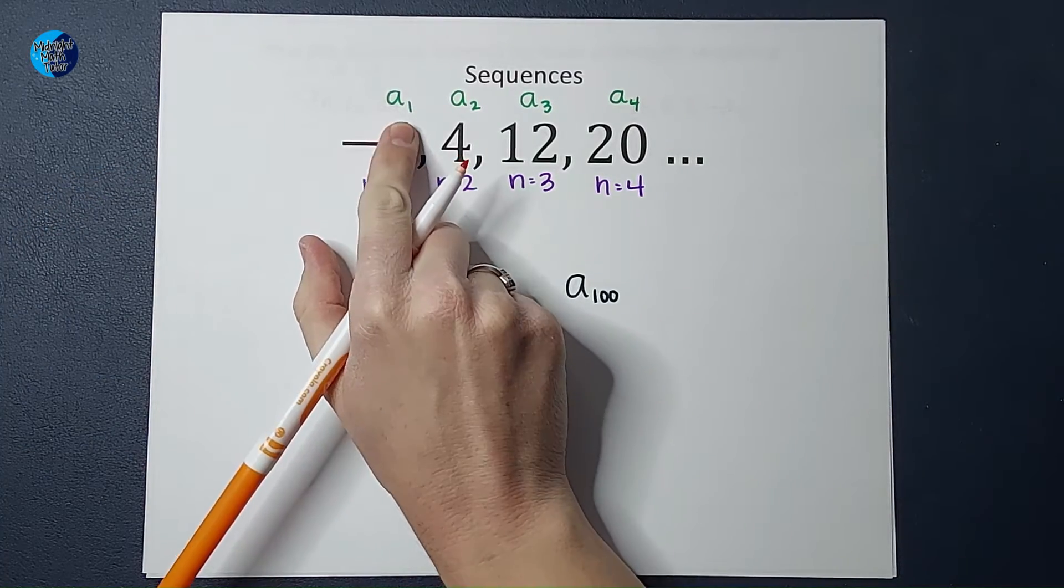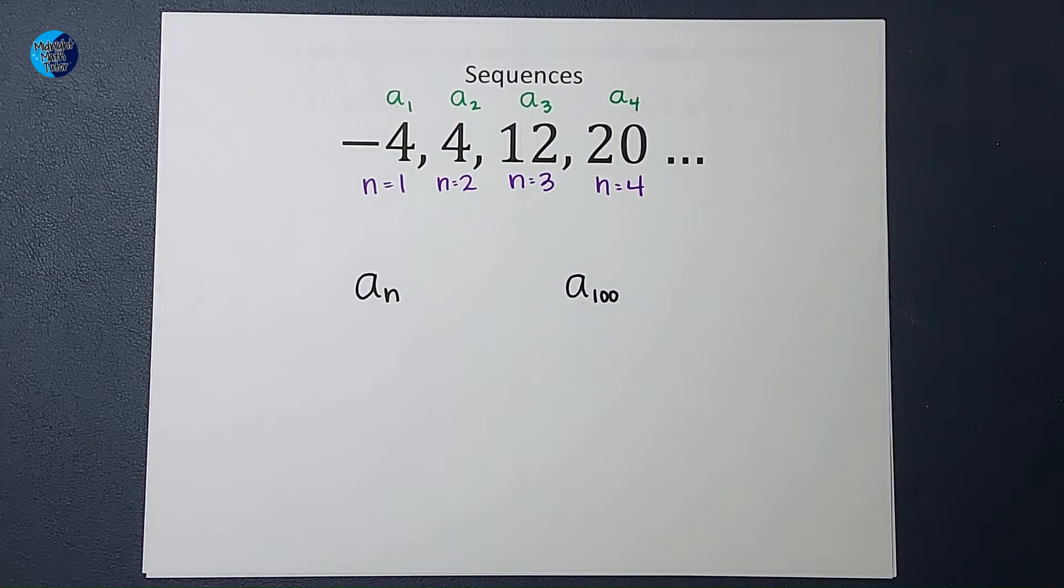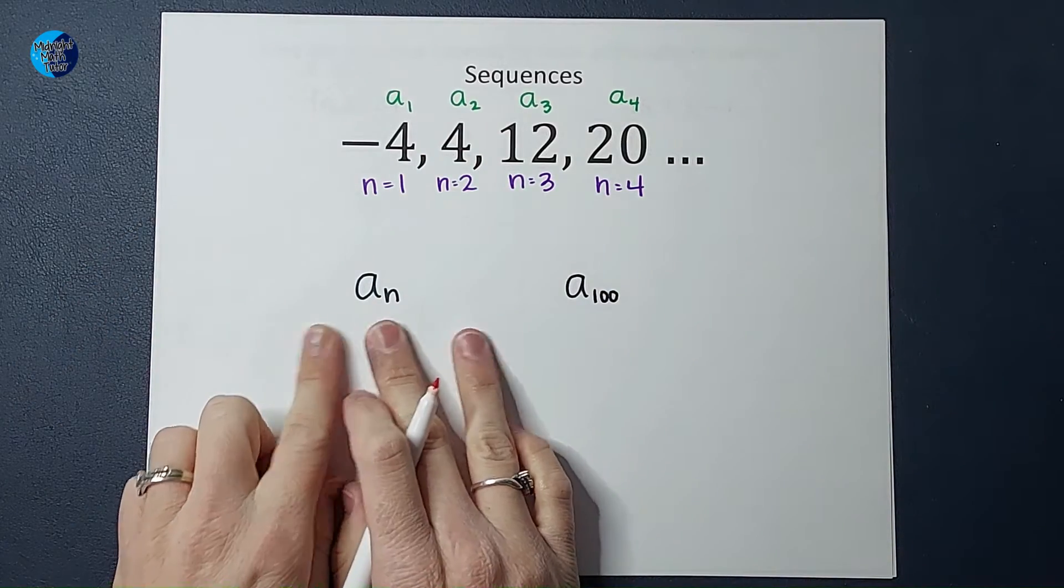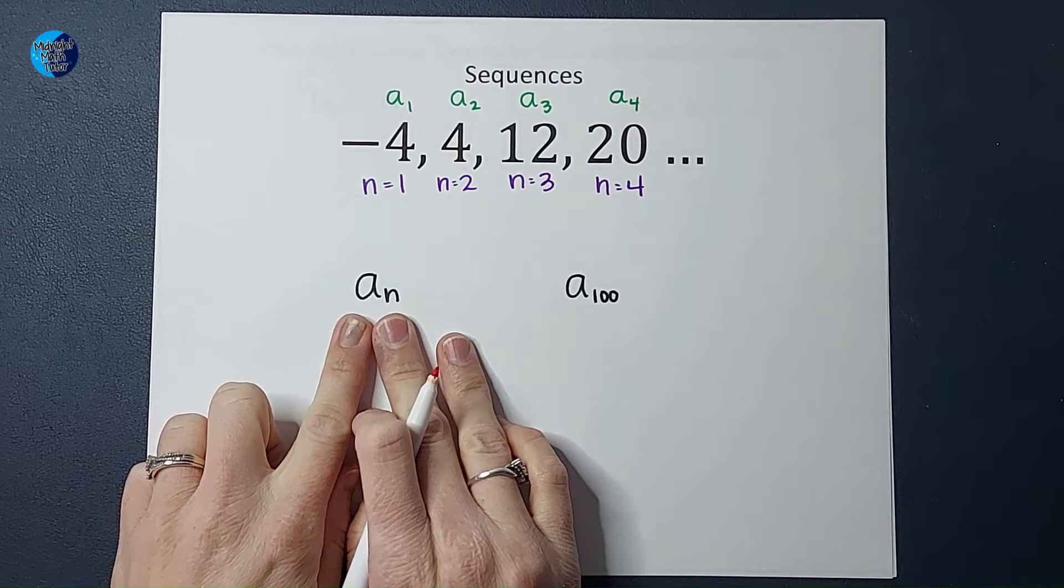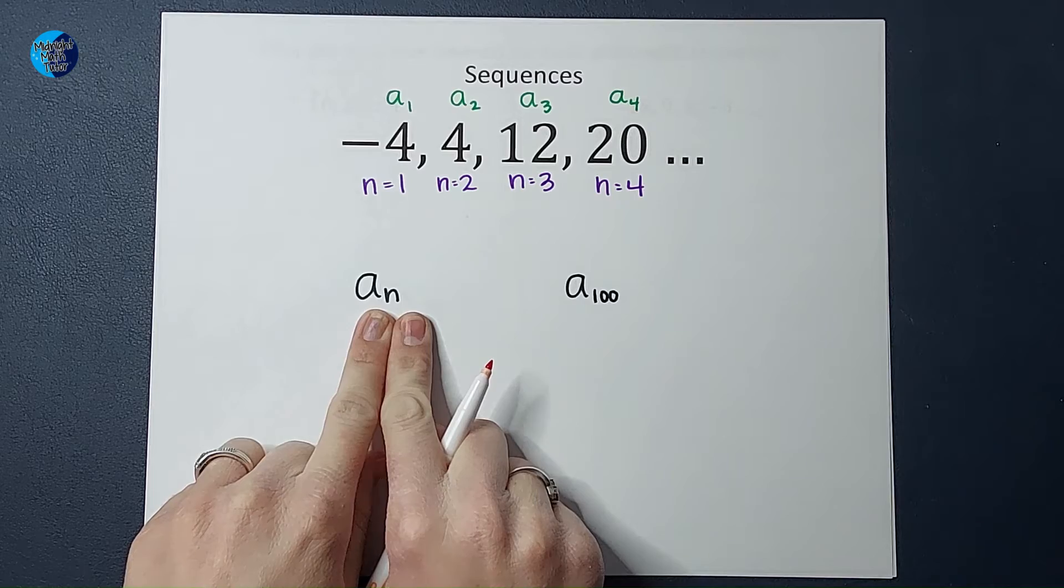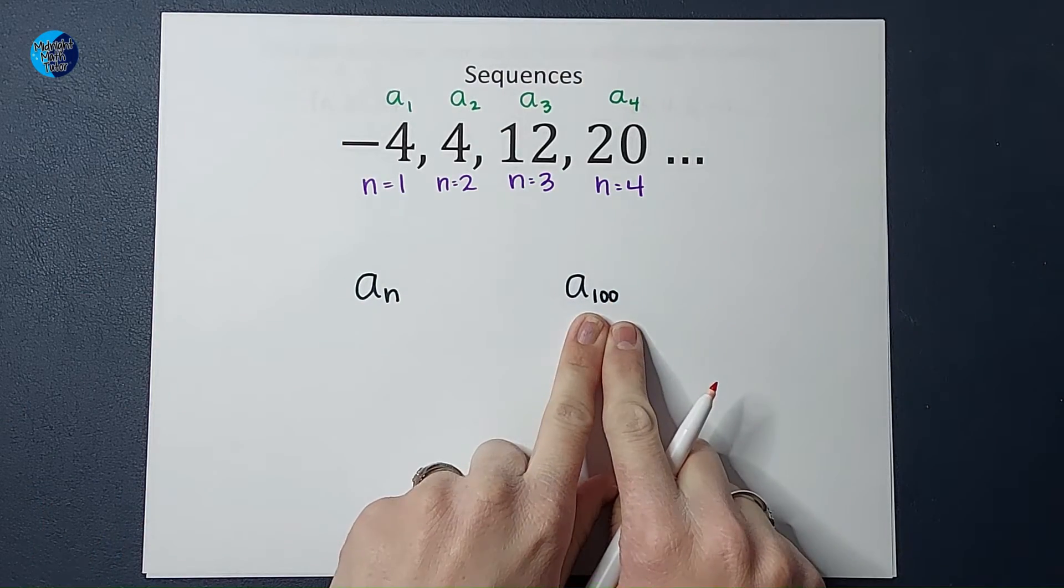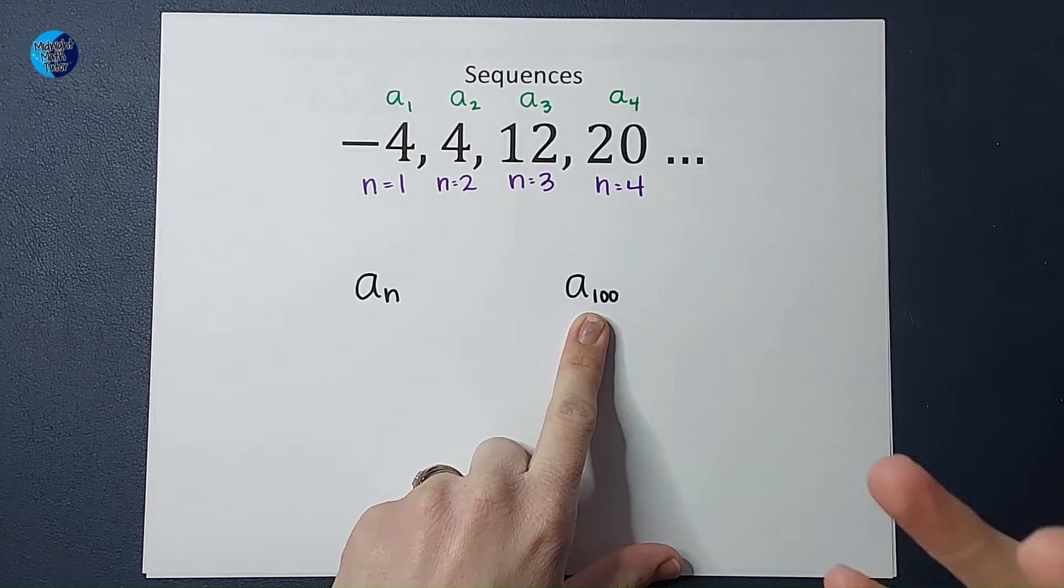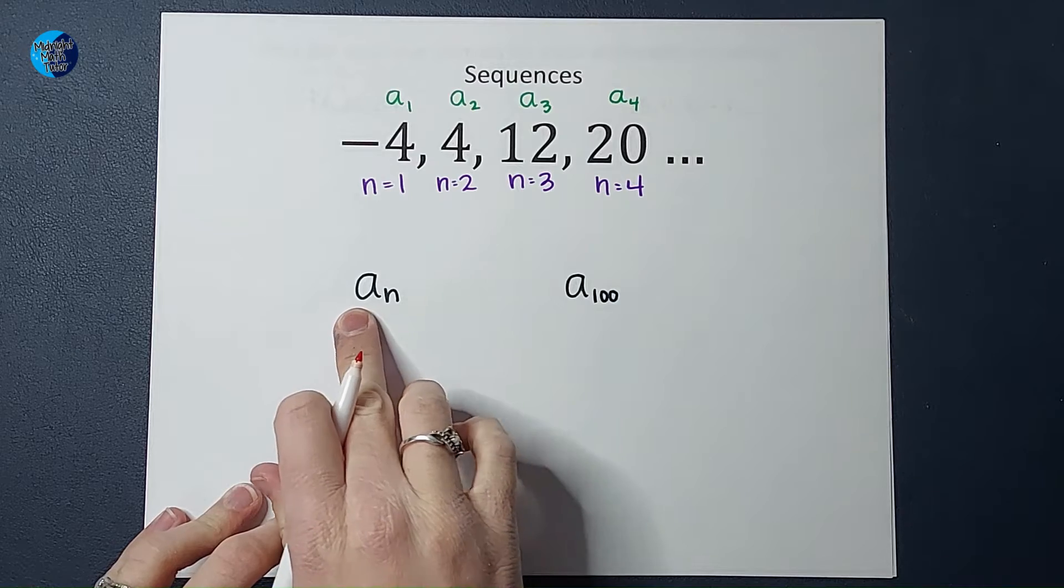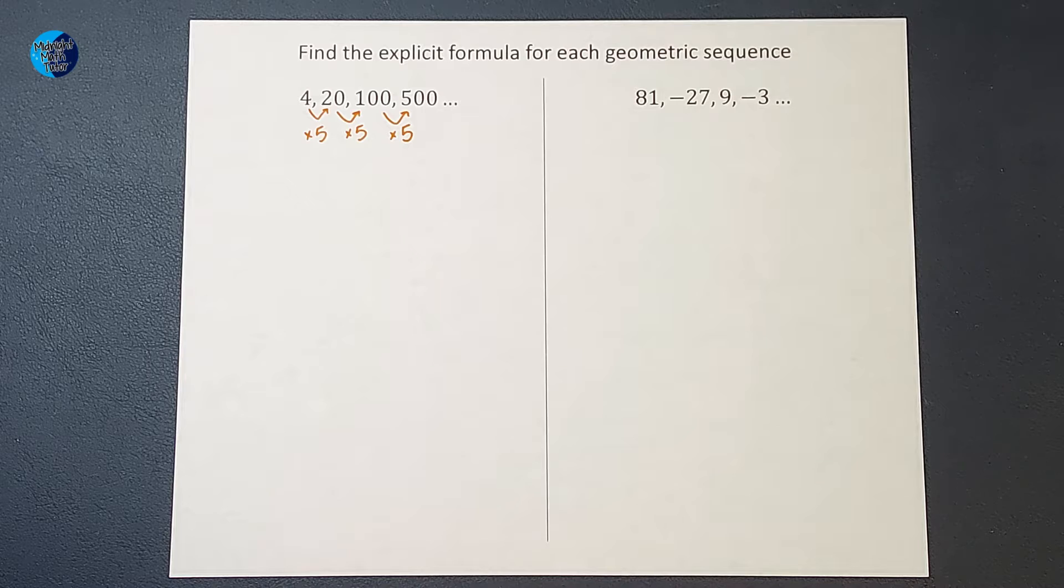When you see A with a little number like this, a little subscript, a sub one, that's talking about the value of that number. So a sub one in this case is negative four. You're also going to see a sub N quite frequently. What that is saying is plug in whatever number you want for N to find that in the sequence. So if I had a sub 100, I'm looking for the 100th term. As we write our formulas, we're going to leave a lot of things as A sub N so people can plug in what they want.